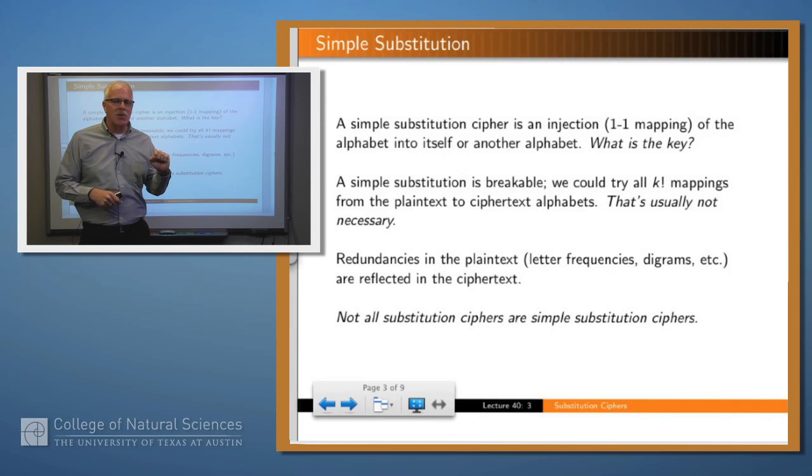Often when you use a simple substitution algorithm, or I should say always, the redundancies in the plain text are going to be reflected in the cipher text. They're just going to be moved on to different letters. And it's important to remember that not all substitution ciphers are simple substitution ciphers.